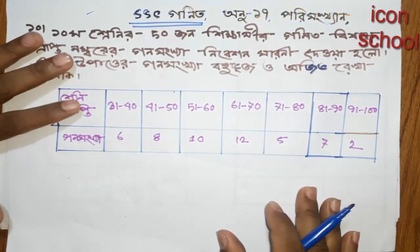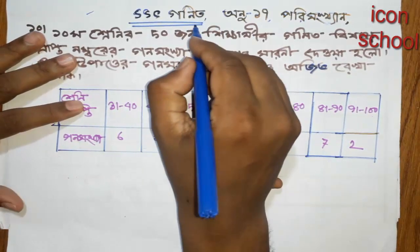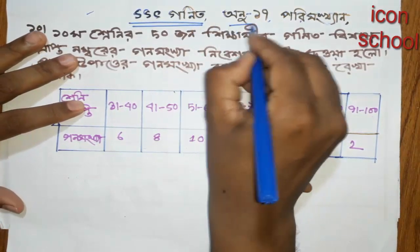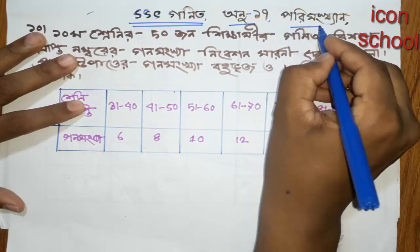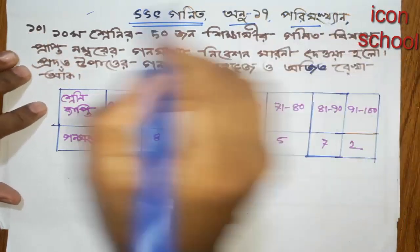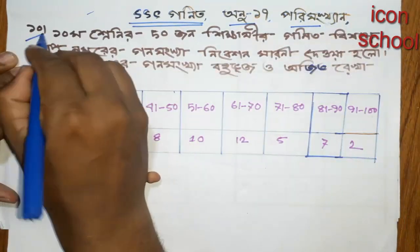Hello everyone, we are doing SSC GANIT 1911. Now we are going to get 10 numbers.